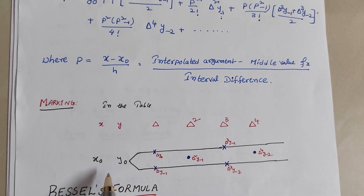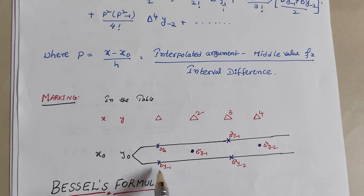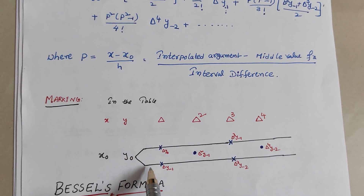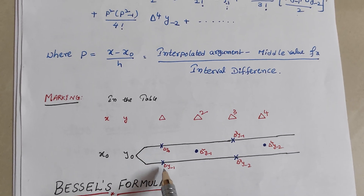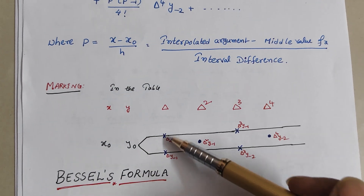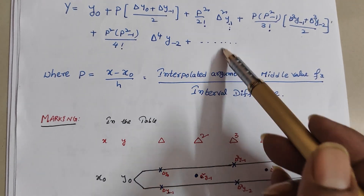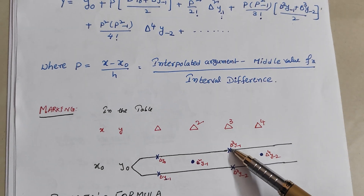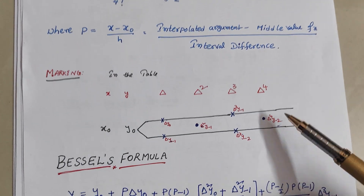Prepare a table. The middle value is x0. Mark y0 in the middle going down. The line pi is going to be the average. Delta y0 and delta y minus 1 are on the line. Delta squared y minus 1 is marked. Delta cubed y minus 1 and delta cubed y minus 2 follow. Delta power 4 y minus 2 is marked below.